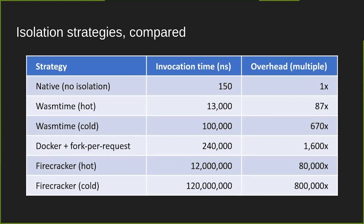Fine-grained isolation using Wasmtime, which is one of the state-of-the-art WebAssembly runtimes, introduces an 87X overhead. That's pretty bad, but to put this in context, that's 13 microseconds — faster than I can ping my home router over a wired internet connection from my laptop. So it's still pretty fast, but if you're trying to pack as much work into a given piece of hardware, you want that number as low as possible.